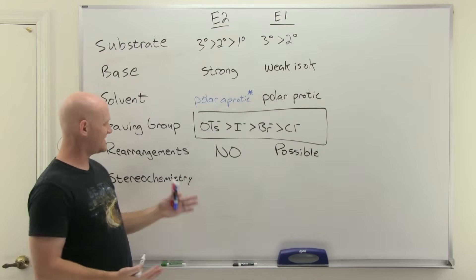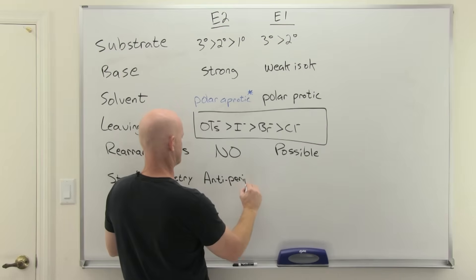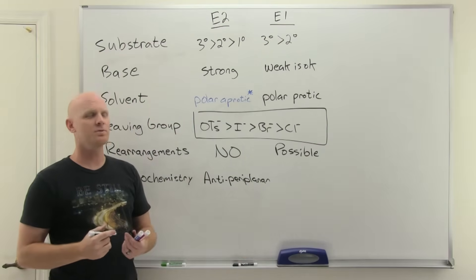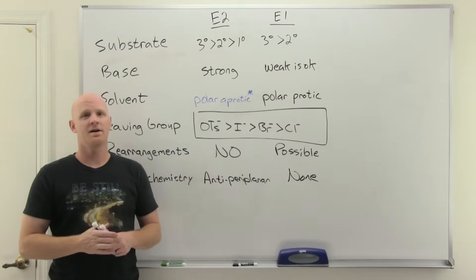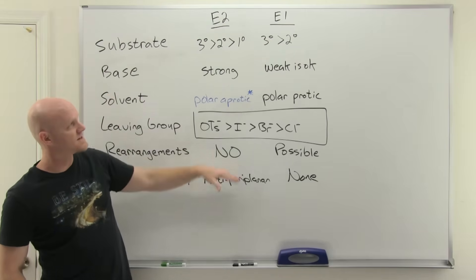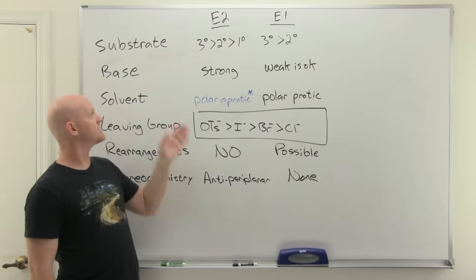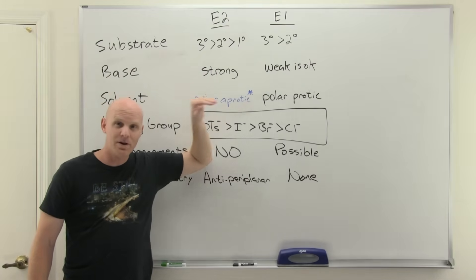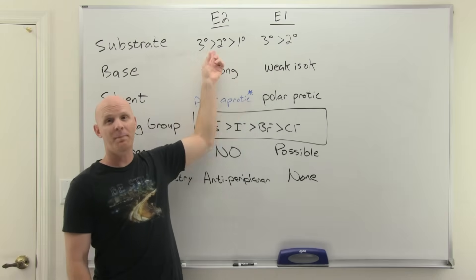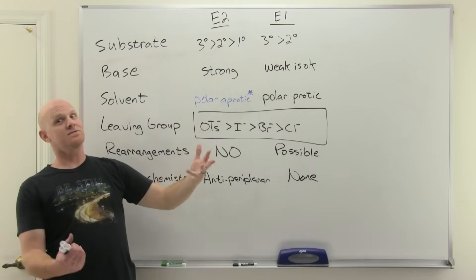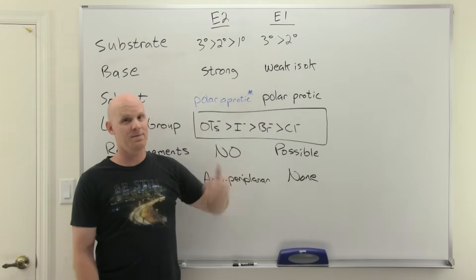For stereochemistry, E2 has the requirement that your beta hydrogen and your leaving group be anti-periplanar — nothing to worry about as far as E1 is concerned. So to distinguish between E1 and E2, just like SN1 and SN2, the single biggest distinguishing factor is the base: strong base means E2, weak base means E1. It's an even bigger deal than with substitution reactions, because in substitution the substrate trends were opposite, but for E1 and E2 the more substituted substrate is faster for both. Your major difference really comes down to strong base or weak base.